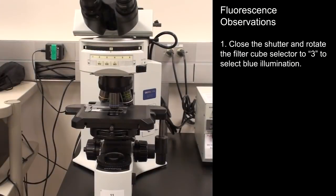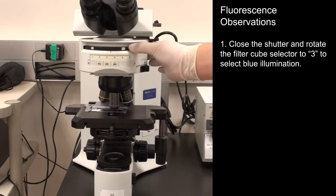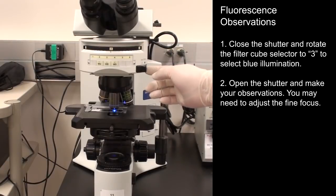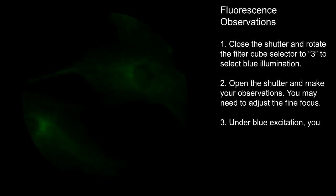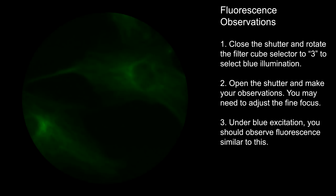Close the shutter and rotate the filter cube selector to 3 to select blue illumination. Open the shutter and make your observations. You may need to adjust the fine focus. Under green excitation, you should observe fluorescence similar to this.